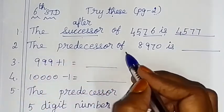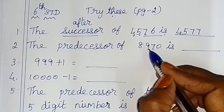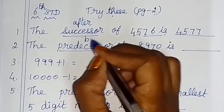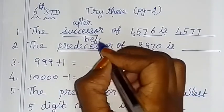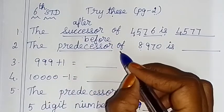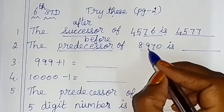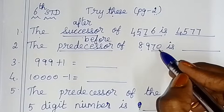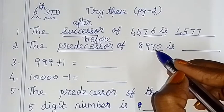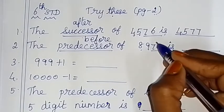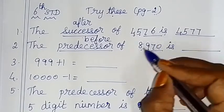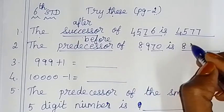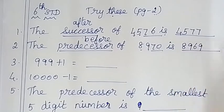The predecessor of 8970. Predecessor means the before number. Let's check the last two digits: 70, so the before number is 69. Therefore, the predecessor of 8970 is 8969.